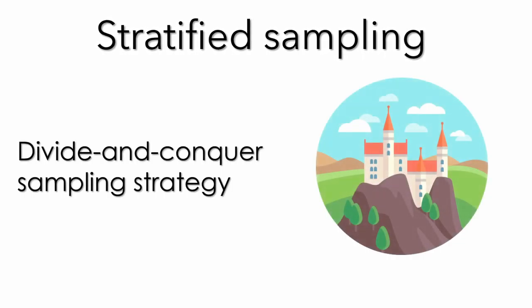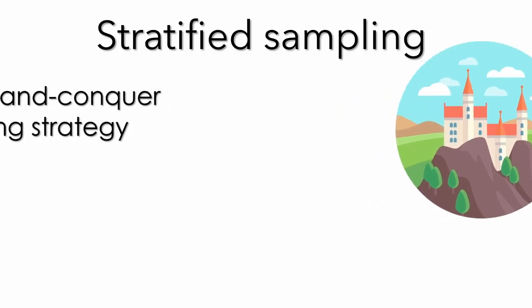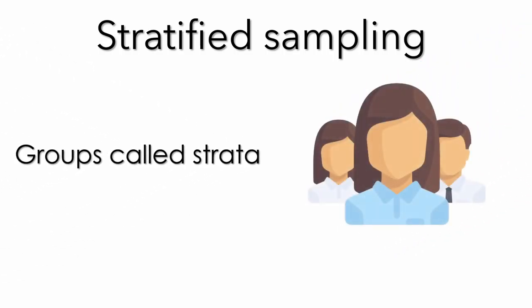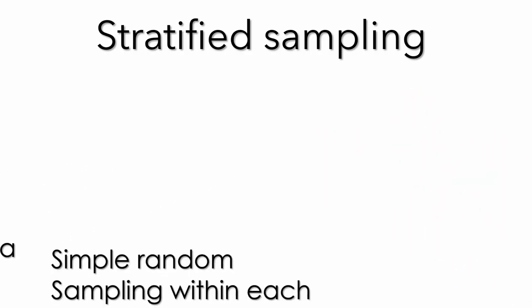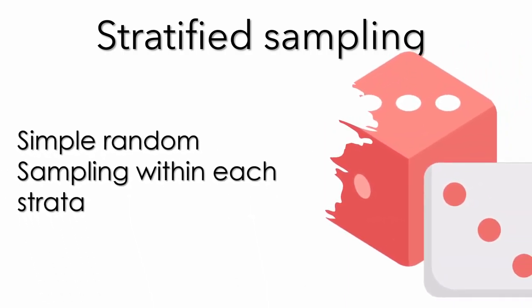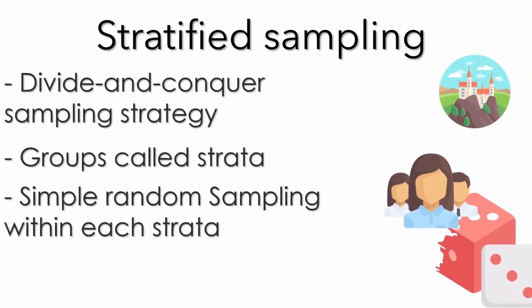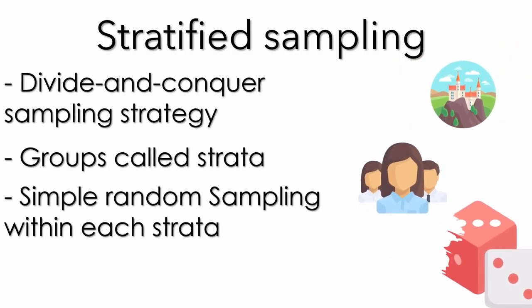Stratified sampling uses the divide and conquer strategy. The groups are called strata, and we use simple random sampling in each stratum. Here is an overview.